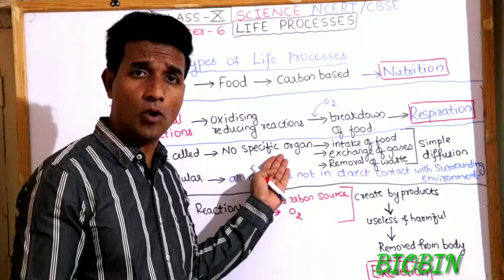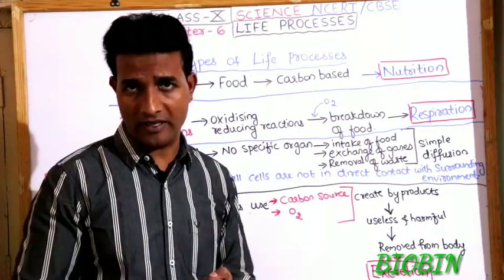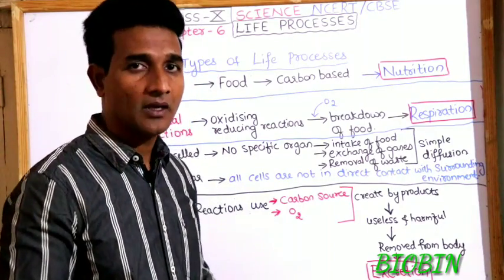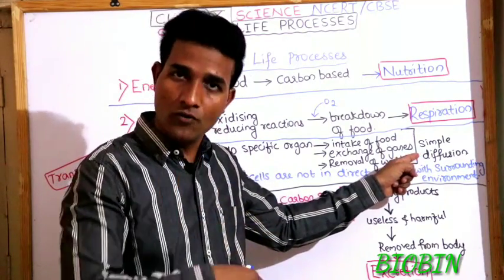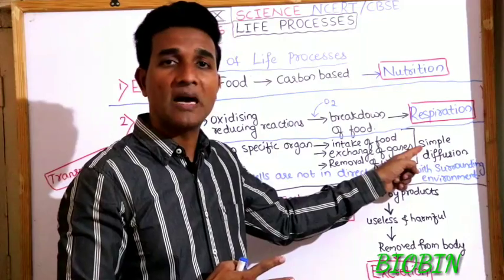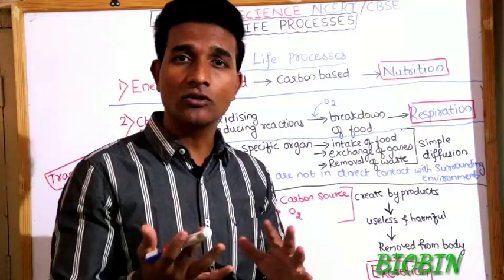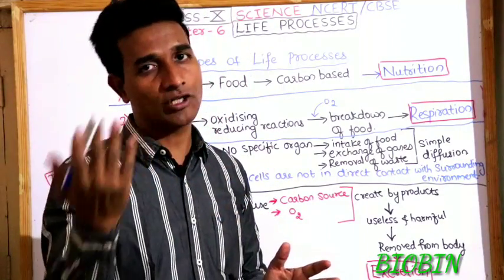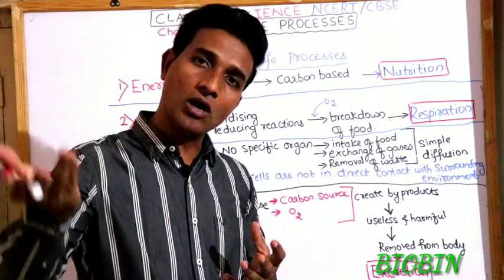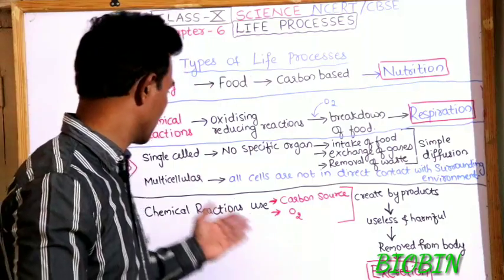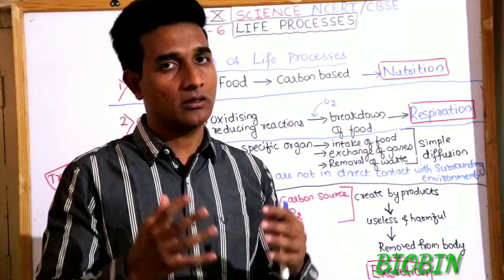Single-celled organisms don't have specific organs in the body to take in food, exchange gases, or remove waste. As they are made up of a single cell, the organism obtains food or removes waste by simple diffusion. Diffusion is the movement of molecules or ions from a region of higher concentration to a region of lower concentration — if there is more waste inside, it goes outside; if there is more food outside, it comes inside.